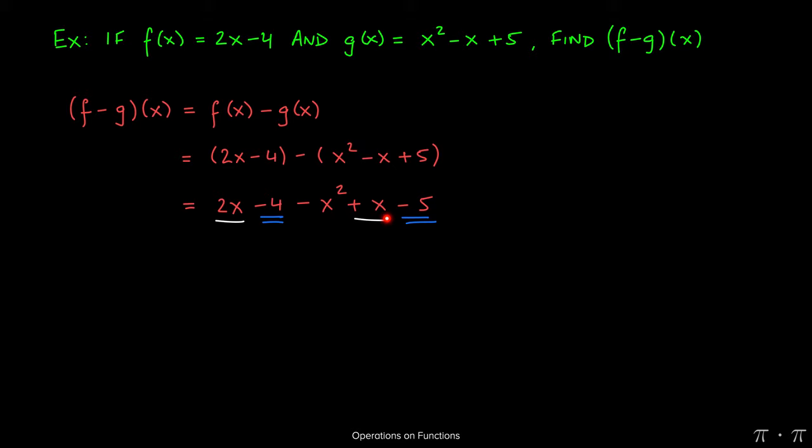The 2x and the x are like terms, so that's going to give us 3x. Negative 4 minus 5 will give us negative 9. That's exactly what we have next: negative x squared plus 3x minus 9. And that's it.